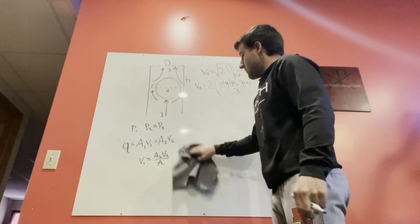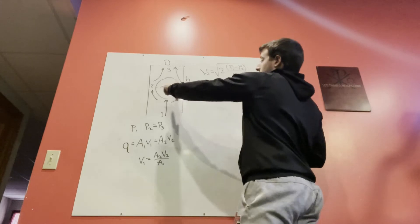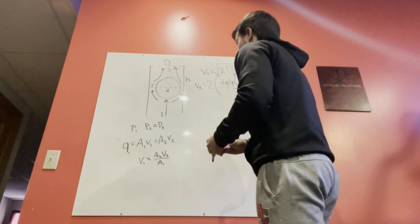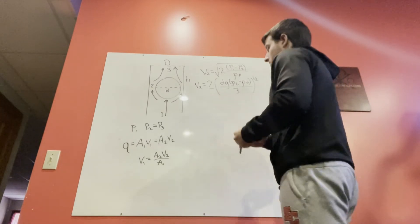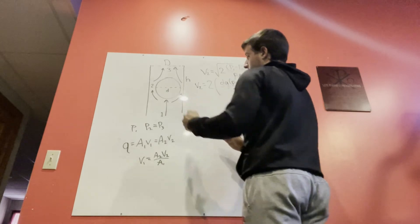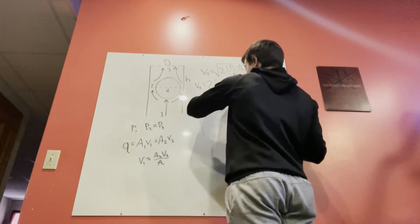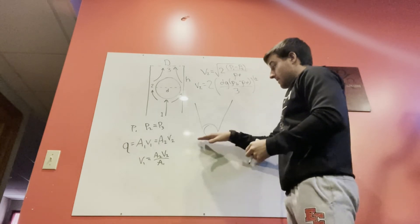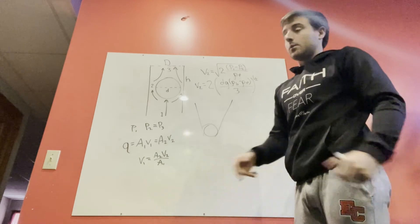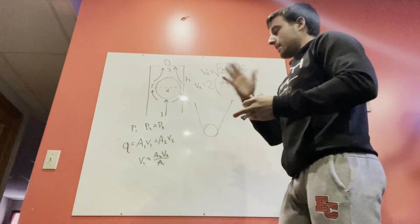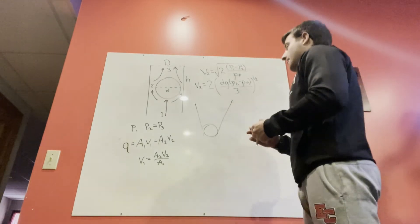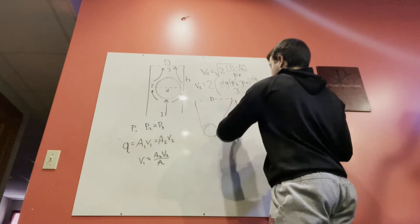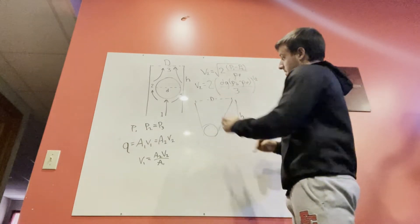Next we relate the height of the ball to the flow rate. The rotameter is not exactly straight — it is slightly tapered. The minimum diameter at the bottom equals the ball diameter d so the ball doesn't fall out. As you go higher up the rotameter, the diameter of the tube increases. This taper is so slight you can barely see it when looking at the device.